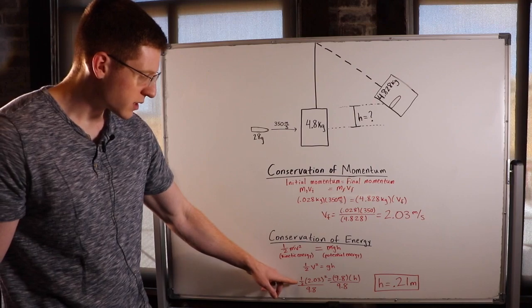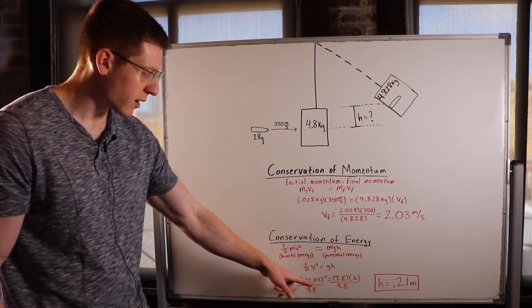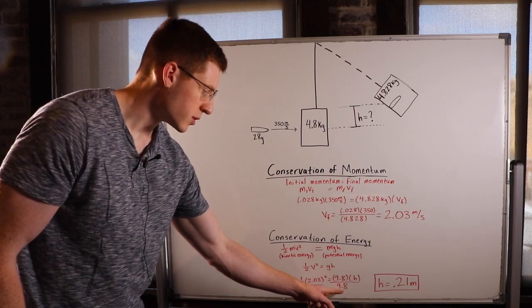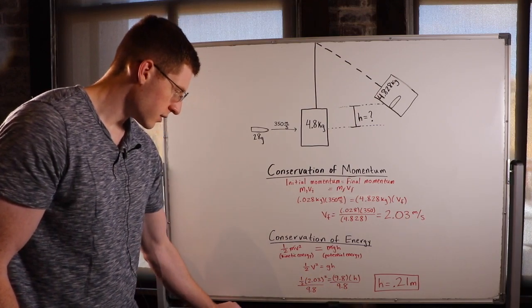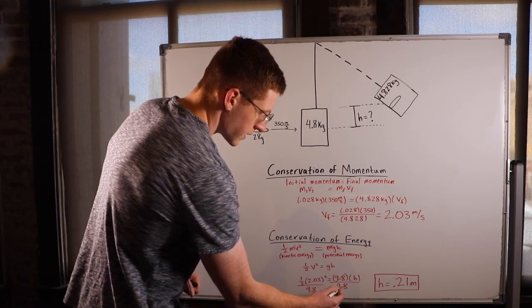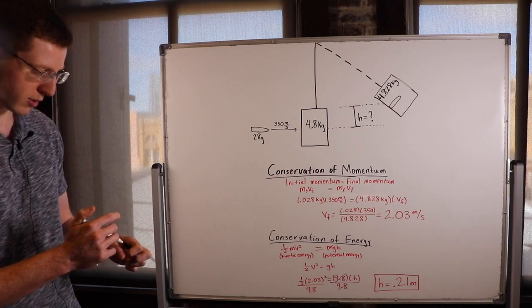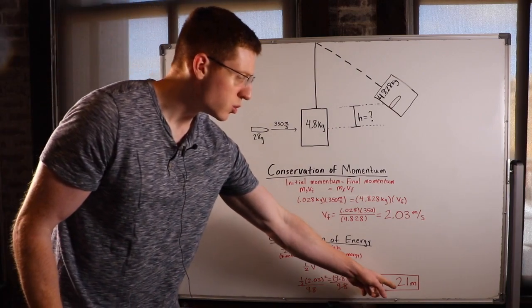So I'll do one half times 2.03 squared equals 9.8 times h, and then just divide both sides by 9.8, and we'll cross this out here. And we'll be left with h equals one half times 2.03 squared over 9.8, and you'll get 0.21.